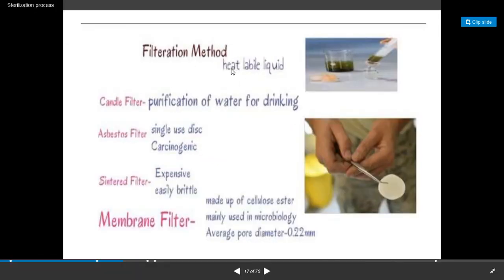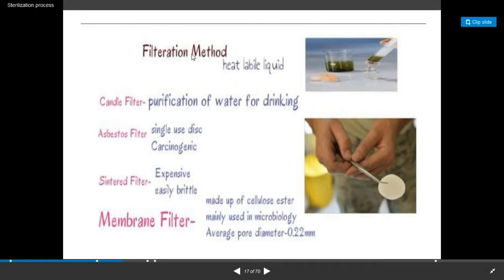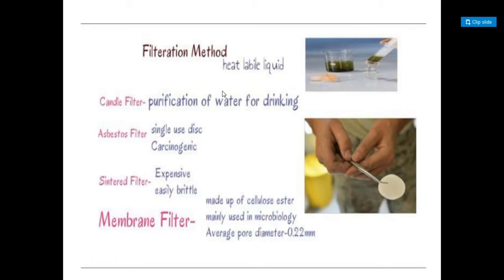Filtration methods are used when the material is heat labile, meaning heat sensitive. If the sterilizing material is sensitive to heat, then filtration methods are used. These include candle filter used for purification of water for drinking purposes; asbestos filter, which is a single-use disc used in case of carcinogenic agents; sintered filter, which is expensive and easily brittle; and membrane filter, which is made up of cellulose acetate, mainly used in microbiology, with an average pore diameter of 0.22 mm. These filtration methods are used to sterilize materials which are sensitive to heat or heat labile.